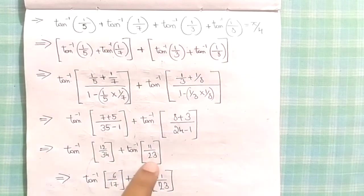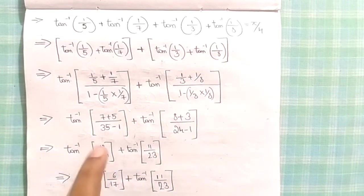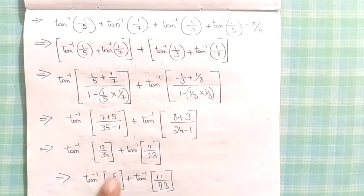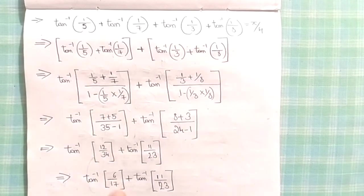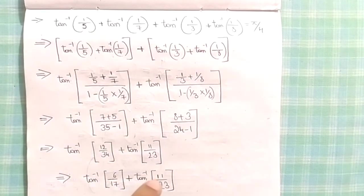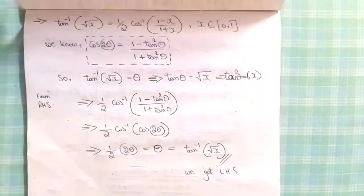This is further simplified: 12/34 is simplified to 6/17, so tan inverse of 6/17 plus tan inverse of 11/23. We will move on to the next page.